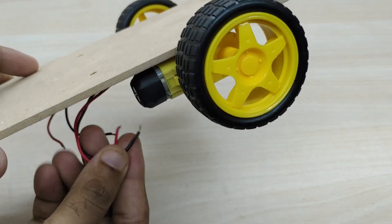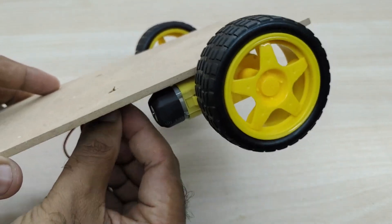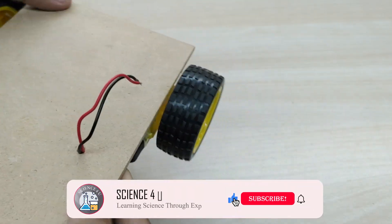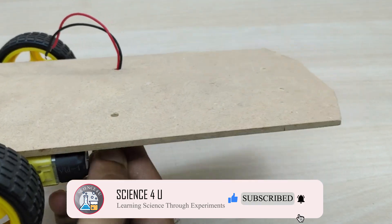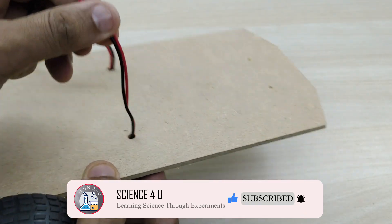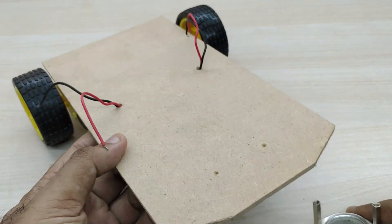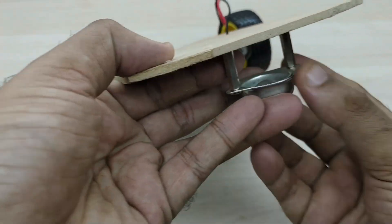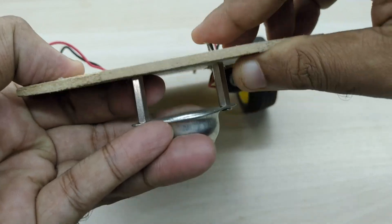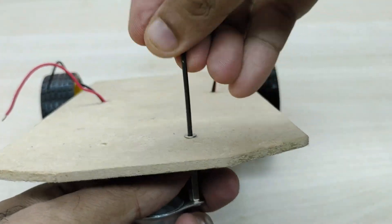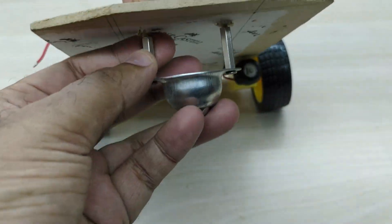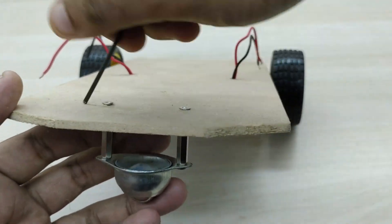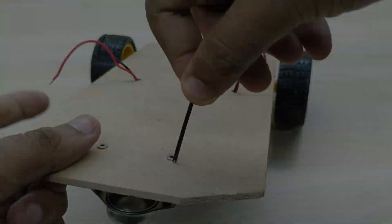Take the positive and negative wires of both the motors through the hole from below to the top. Now, we have to fix the caster wheel at the front. Providing a caster wheel at the front helps the robot to quickly change direction, since it has a ball that can roll in any direction.